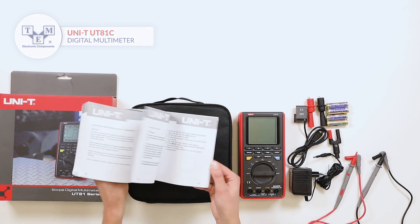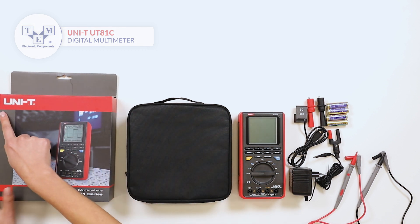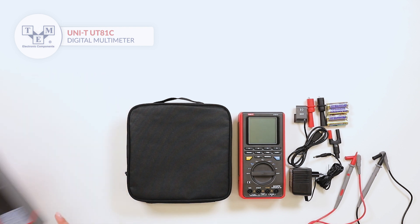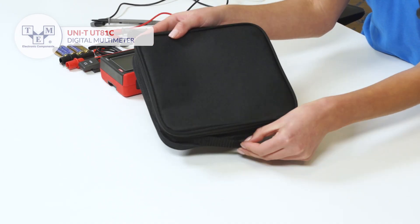The meter comes with a CD-ROM, operating manual, a carrying bag, power adapter, alligator clips, USB interface cable, batteries and test leads.